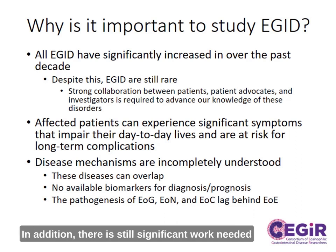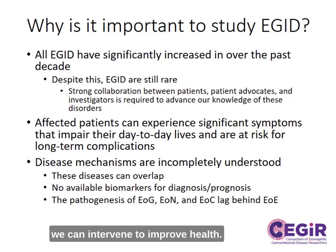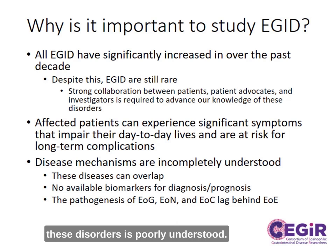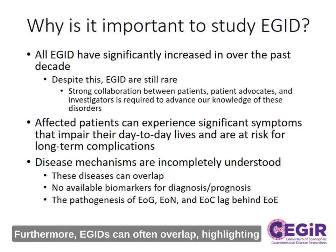In addition, there is still significant work needed to understand how the diseases work and how we can intervene to improve health. The molecular pathogenesis of many of these disorders is poorly understood. Furthermore, EGIDs can often overlap, highlighting their relatedness and the need to identify better diagnostic and prognostic markers.